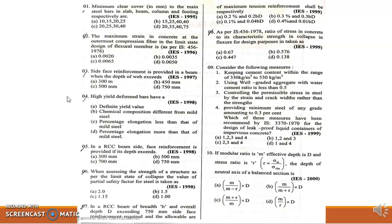Ninth question: Consider the following statements. First, keeping cement content within the range of 330 kg per cubic meter to 580 kg per cubic meter. Second, using well-graded aggregate with water-cement ratio less than 0.5. Three, controlling the permissible stress in steel by the spacing and crack width rather than strength. Fourth, providing minimum steel of 0.3 percentage. According to IS 3370-1970, all these statements are correct for leak-proof liquid containers, so we can choose option A.